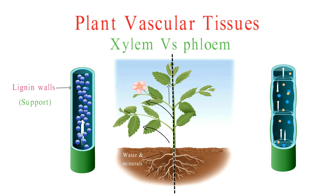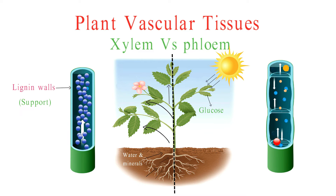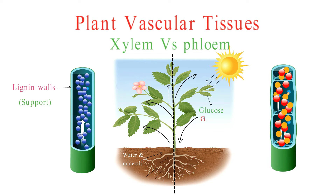Phloem, on the other hand, is all about moving food. It transports the products of photosynthesis, such as sugars and other organic compounds, from the leaves where they are produced to other parts of the plant for growth, storage, or energy.